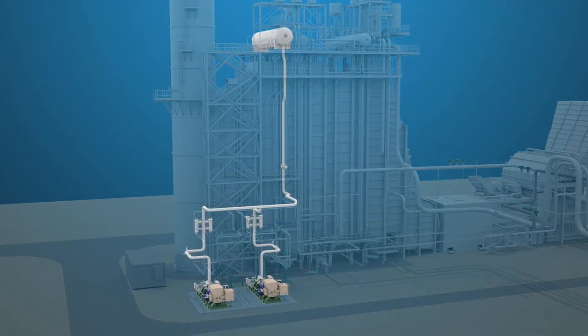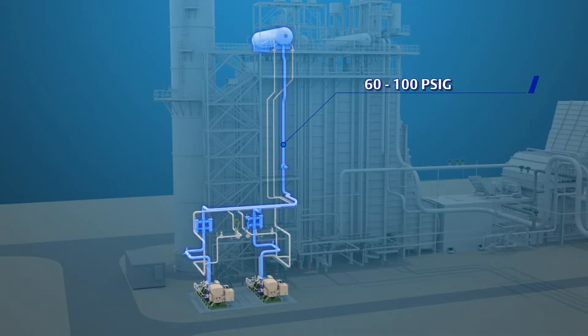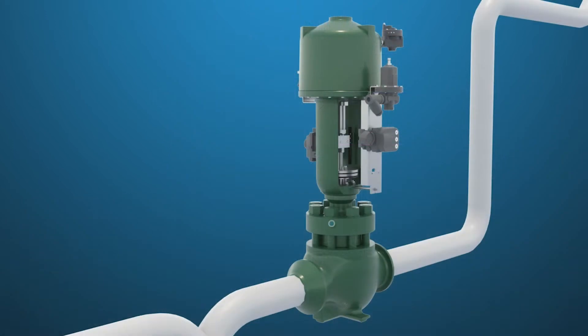Feed pump suction pressure is 60 to 100 PSIG. Pump discharge pressures range from 2,000 to 3,500 PSIG and recirculates back to the low pressure drum. The recirculation valve will see cavitating pressure drop for its entire operating range.